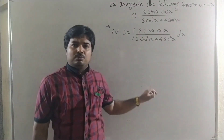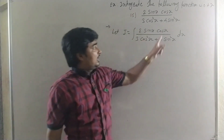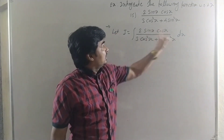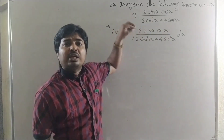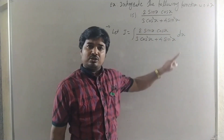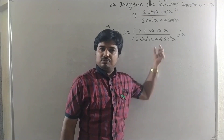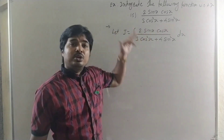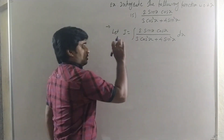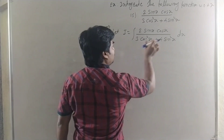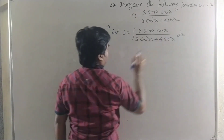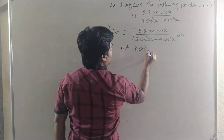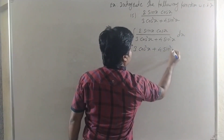This is not in the standard form. To find the integral by substitution, we need the derivative of some function in the multiple of dx. Here, the multiple of dx involves sin x and cos x, giving 2sin x cos x. Now, 2sin x cos x is the derivative of sin²x. It is also the derivative of cos²x but with a minus sign. So we substitute the entire denominator: put 3cos²x + 4sin²x = t.